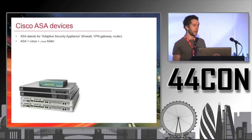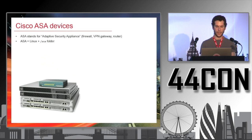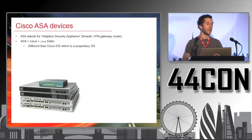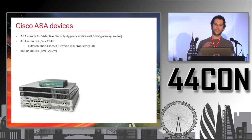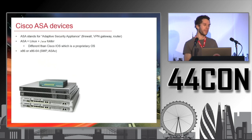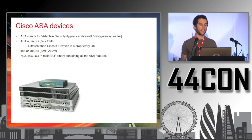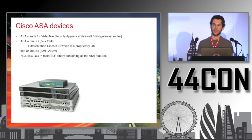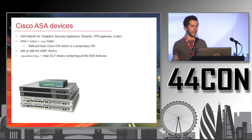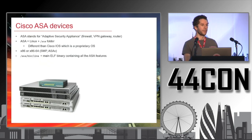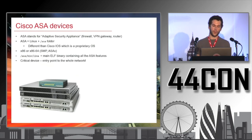Internally, it's actually a Linux system with a specific ASA folder. It's different from Cisco IOS because Cisco IOS is a proprietary system — here it's Linux-based. It's an Intel architecture underneath, and they support both 32 and 64 bits. Internally, there is one binary that is really important if you look at internals: it's the Lina binary, in the ASA bin Lina hierarchy, and it's basically a 50 to 80 meg ELF containing all the ASA features.